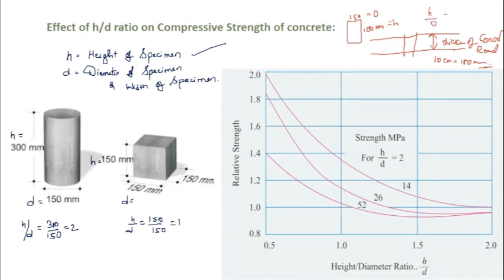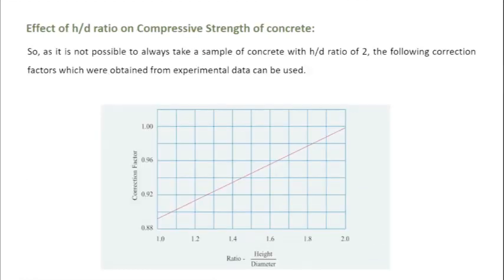So h by d ratio equals 100 by 150, and this is 2 by 3. See here, this specimen is having h by d ratio of 2 by 3. For cylinder it is 2 and for this concrete specimen cube is 1. So instead of 1 and 2, there is h by d ratio of 2 by 3.